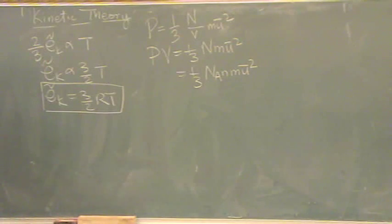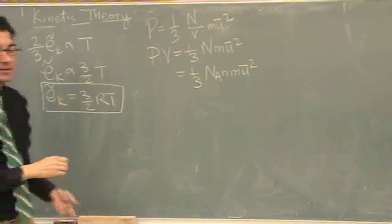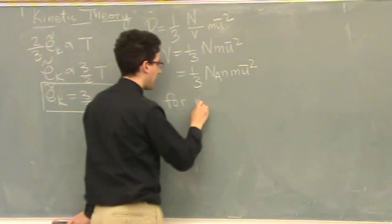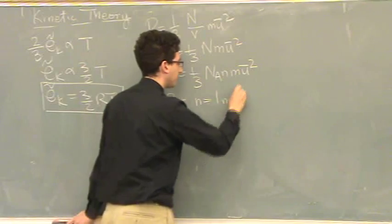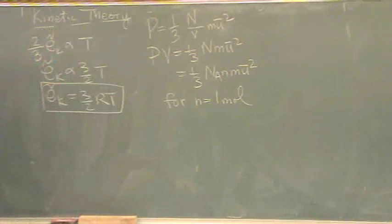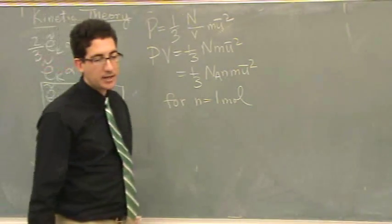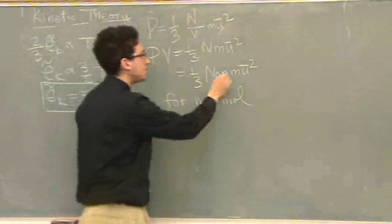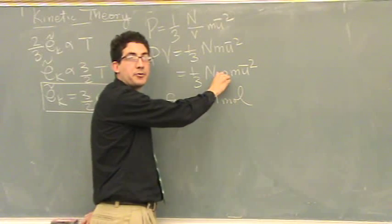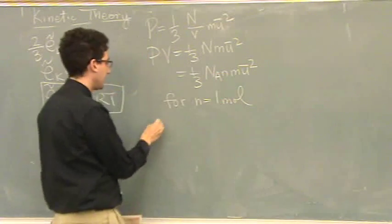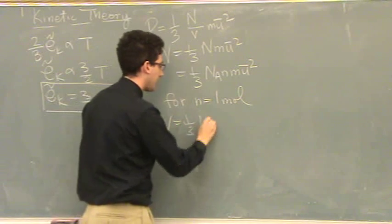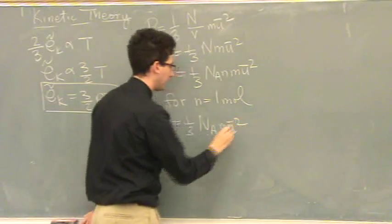Now I'm going to make another magical thing happen. I'm going to say we're doing this for N equals one mole. So we're doing this for one mole of substance, essentially. That's going to cause a couple of nice things to happen. One is this N is going to turn into the number one. So that's going to be gone. So PV equals one-third, N_A, M, U bar squared.